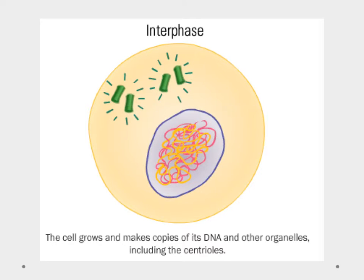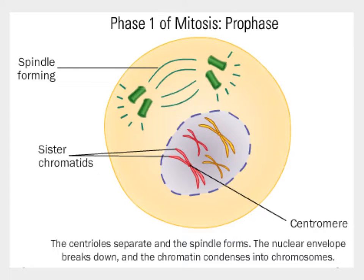In review: interphase is made up of G1, S, and G2. During interphase the cell grows, copies its DNA, and makes copies of organelles including the centrioles, while also functioning normally. Once ready, it enters the M phase and begins mitosis. The first stage is prophase, where the nuclear membrane starts to break apart, exposing the chromatids and chromosomes — our genetic material.